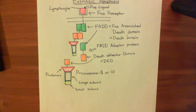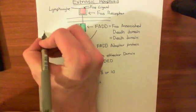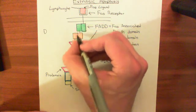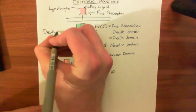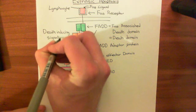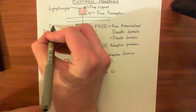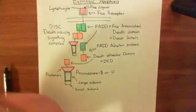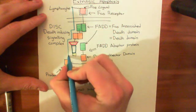This entire structure — the FAS ligand with the FAS receptor, with its FAS-associated death domain, with the FADD adaptor protein, and now with the pro-caspase 8 or 10 — is known as the death-inducing signaling complex, often abbreviated to DISC. That's the name given to this entire large structure.